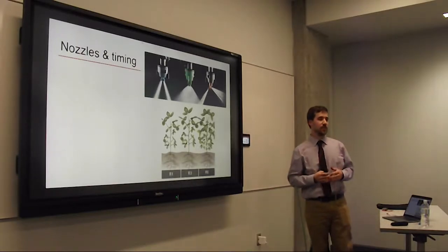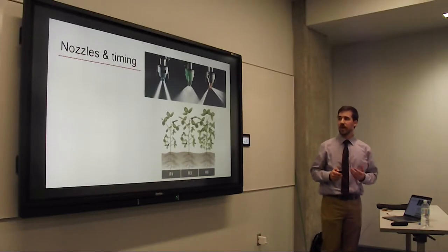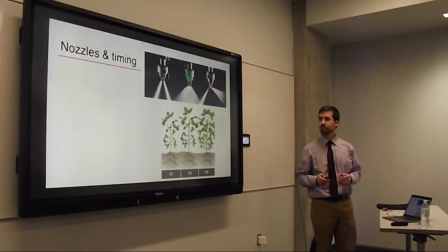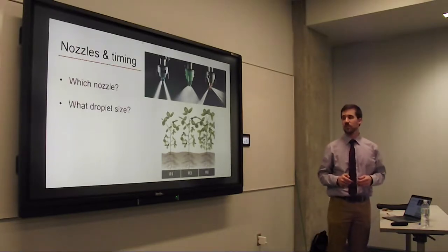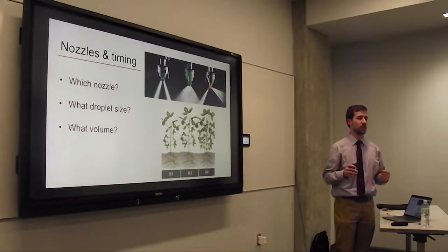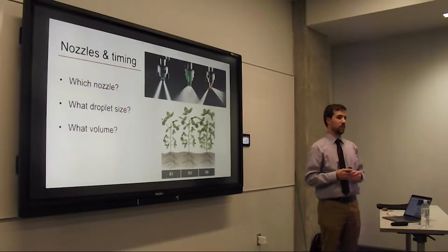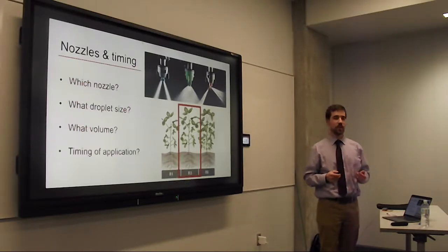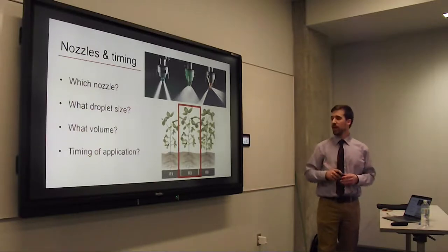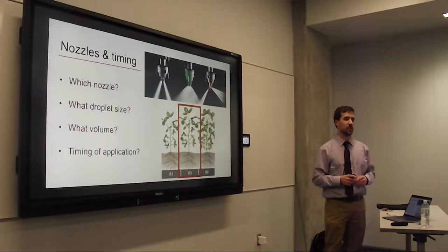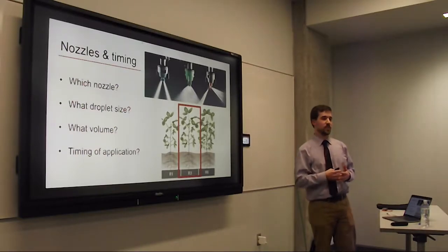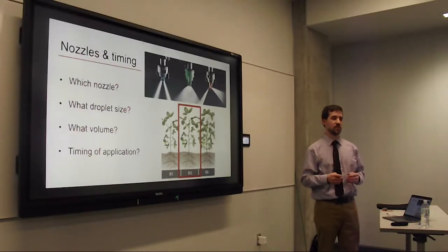Before getting into the actual technology, I want to spend a little time talking about nozzles and timing. These are important, relatively inexpensive changes that farmers can make. Research answered questions like which nozzles to use, what droplet size, and what volume. In general, small droplets are best for achieving thorough coverage, and increasing spray volume can improve coverage as well. For most diseases including frogeye and septoria, applying fungicide at the R3 growth stage — the beginning of pod development — provides the best return on investment, protecting leaves for photosynthesis and yield.